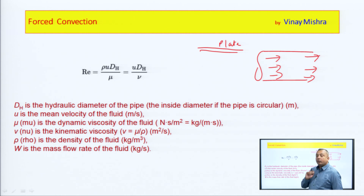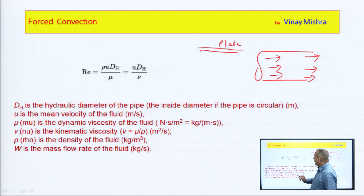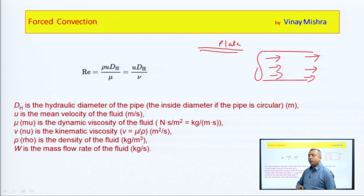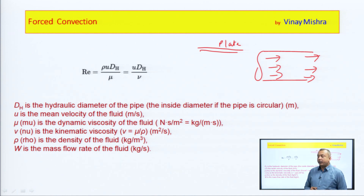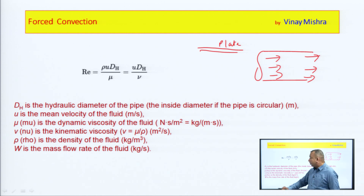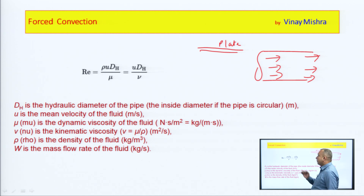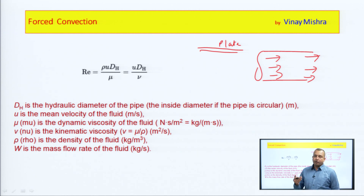Similarly, if we write this in terms of kinematic viscosity, we divide mu by rho (density). For the flat plate we used characteristic length L because there is no diameter for a plate. Here D_h is the hydraulic diameter of the pipe, u is the mean velocity of the fluid in meters per second, mu is the dynamic viscosity, nu is the kinematic viscosity, and rho is the density of the fluid. This is the equation used for pipe flow.